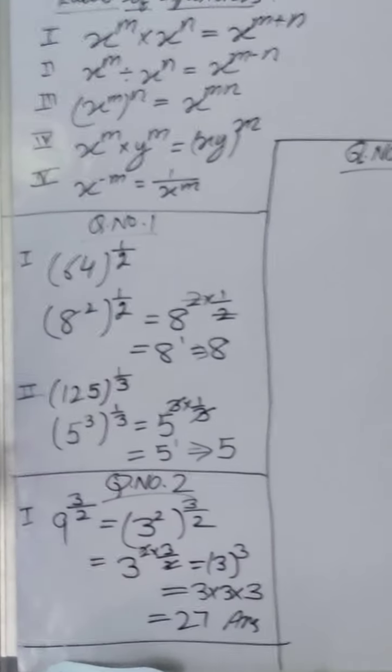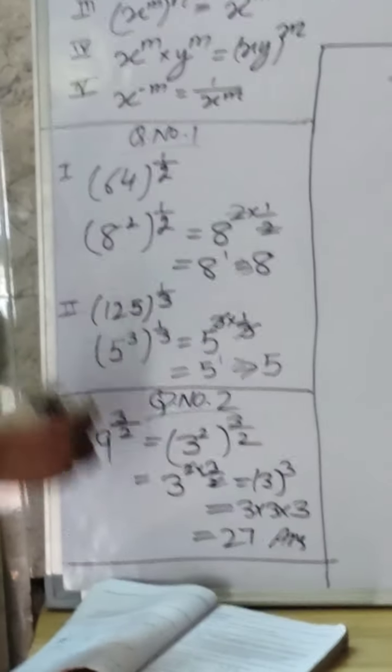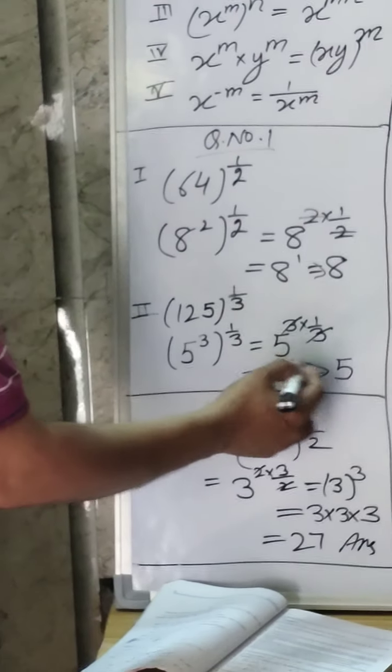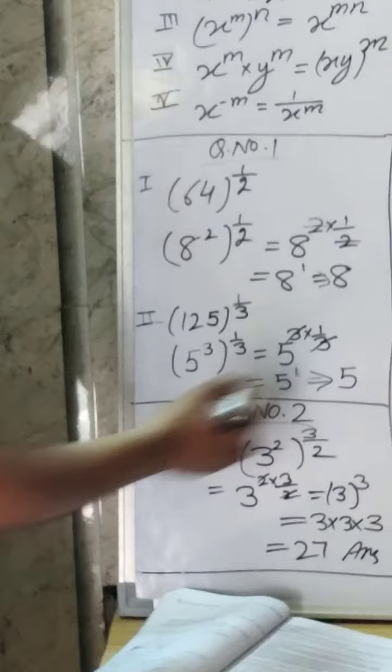Second, 125 power 1 by 3. 125 is 5 power 3, whole power 1 by 3. So 3 and 3 cancel, 5 power 1, it is 5.